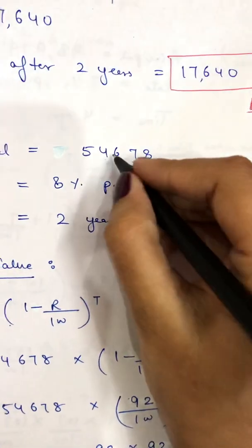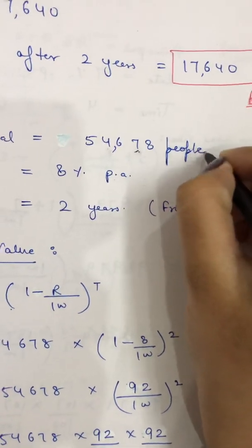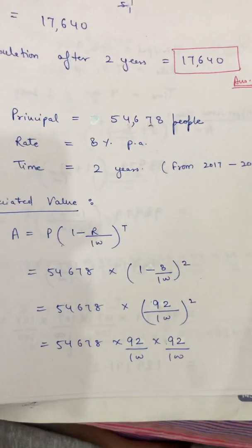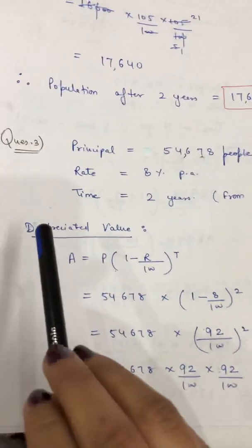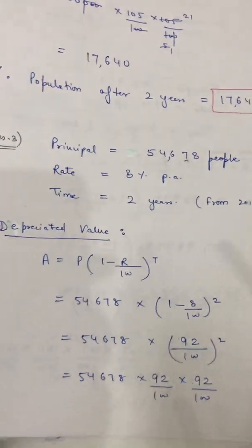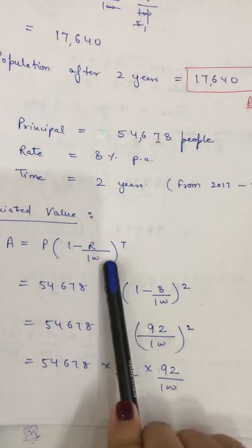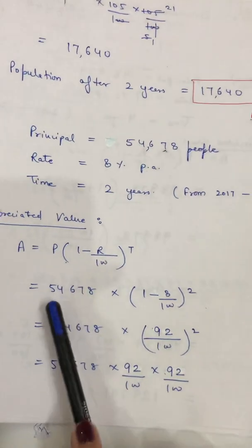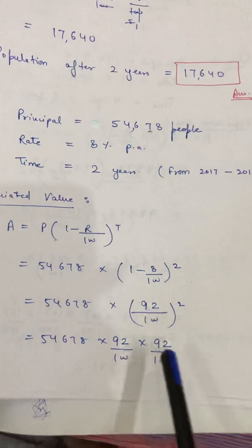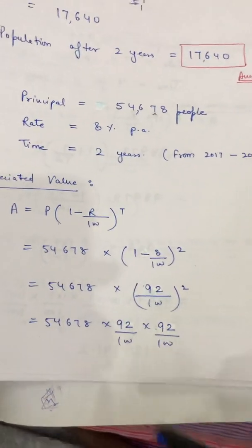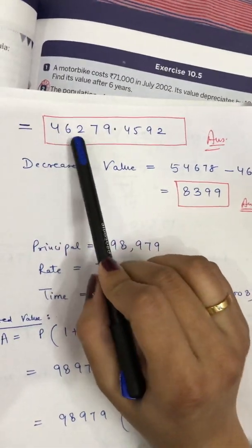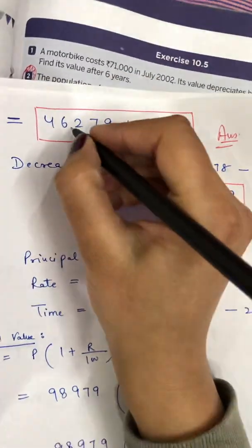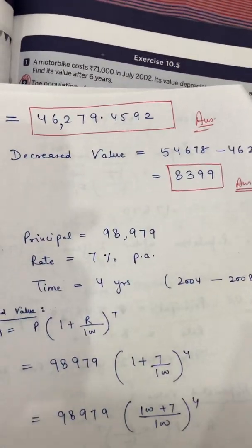Principal = 54,678 people, Rate = 8% per annum, Time = 2 years. Since this is a depreciation question, apply: D = Principal × (1 − r/100)^t. Place all values and open the bracket. Cancel terms where possible and calculate. The result is 46,279.4592.